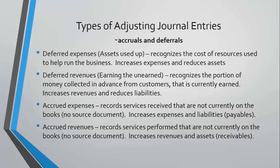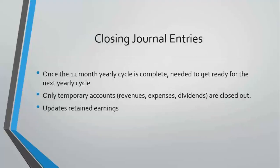Cash is in the daily entries. Two of these adjusting entry types involve revenues, two involve expenses, two involve assets, and two involve liabilities — so they're very important, and often this is where errors can be made because they are a little more complicated. Closing entries are done at the end of the period, only involve temporary accounts, and they update the retained earnings. In a computerized system we can close more often, but in a manual system it's usually done once a year.